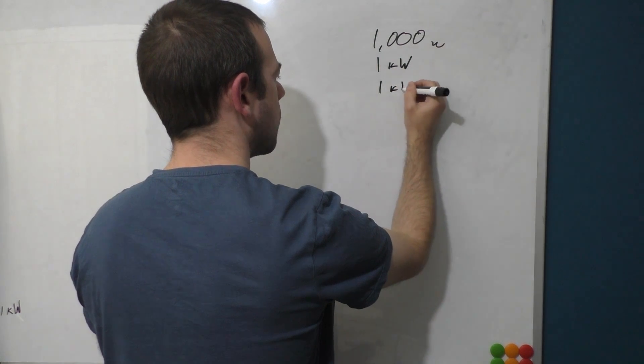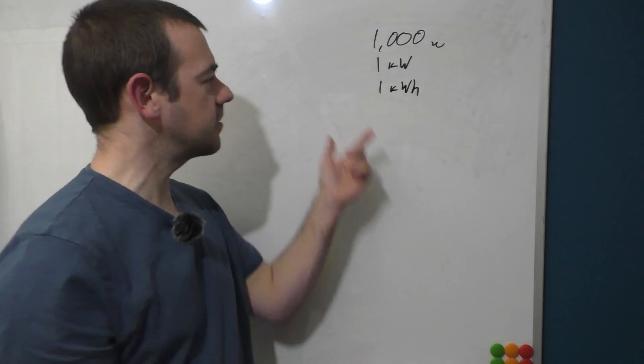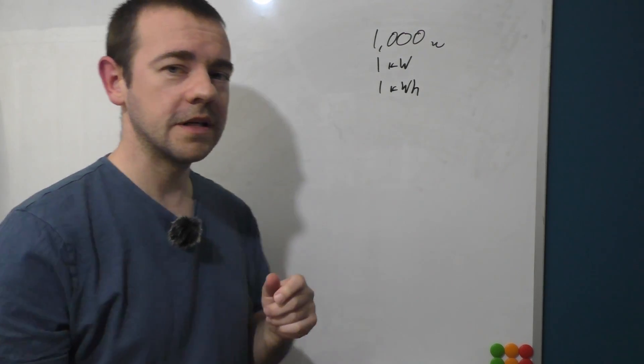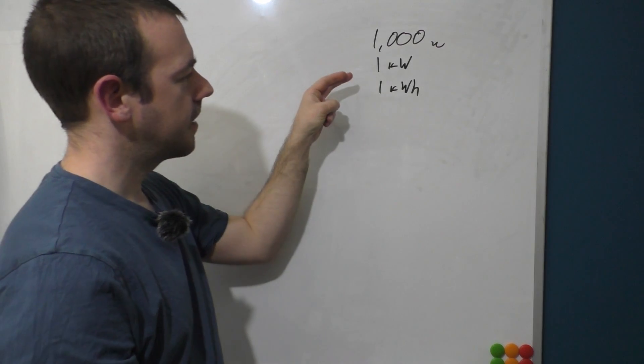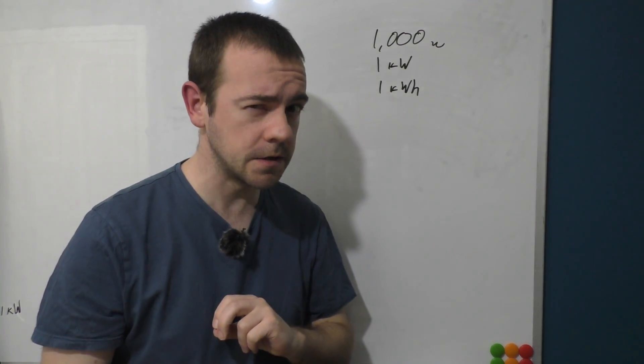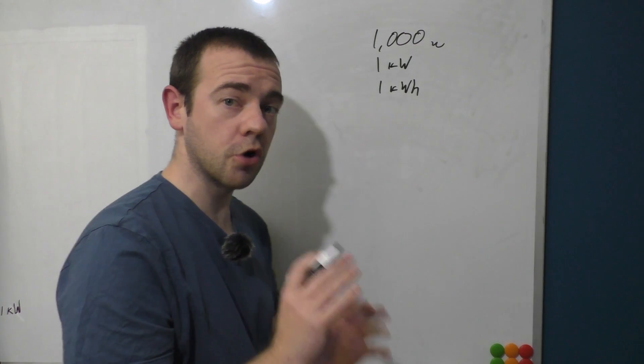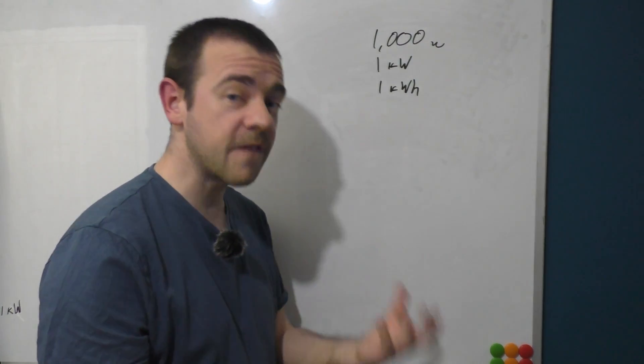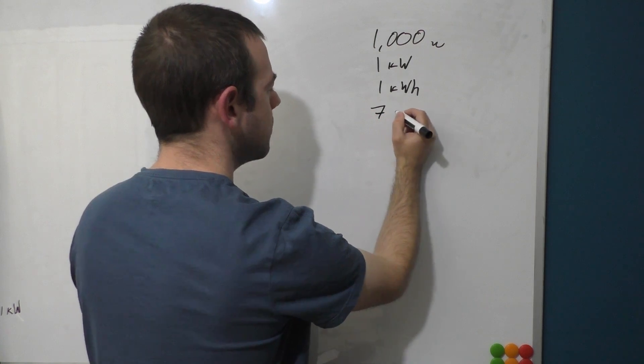But what about kilowatt-hours? If I wrote down one kilowatt-hours, what is that? What's the difference between one kilowatt-hours and one kilowatts? Well, that is a measurement of power and that is a measurement of energy. So in EV terms, if you have a charger installed at home, which is usually called the fast charger, that often will be a seven kilowatt charger.